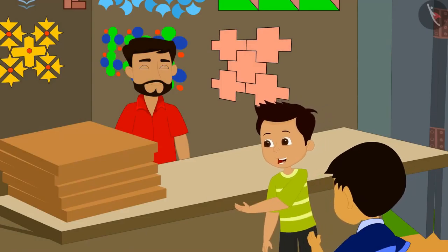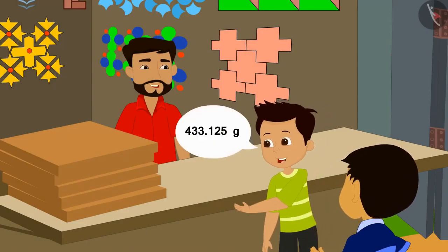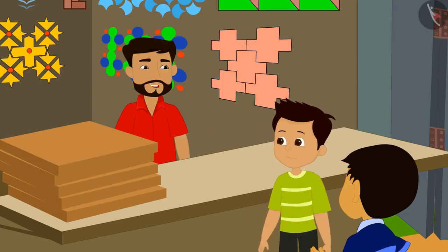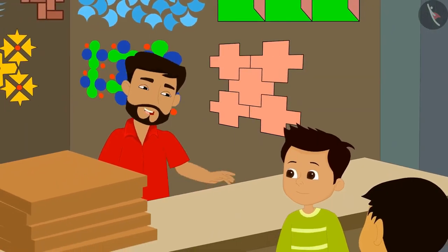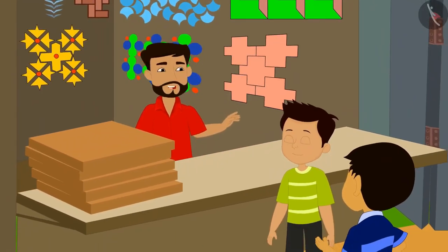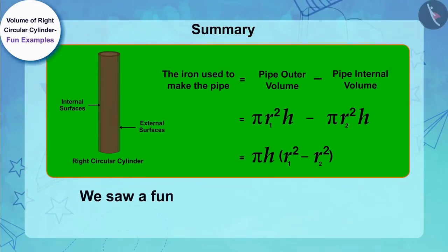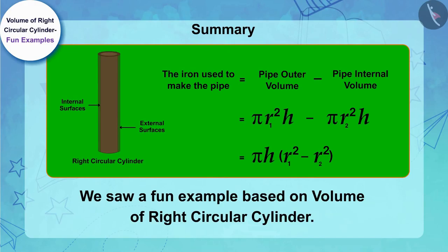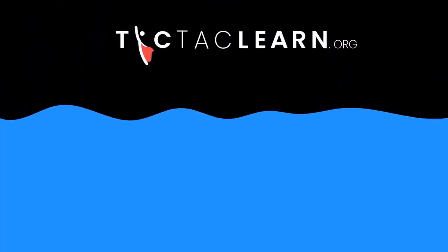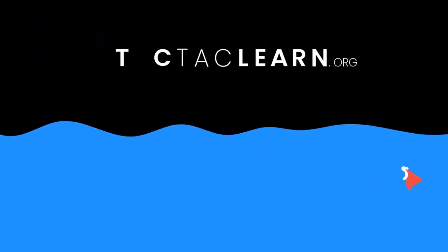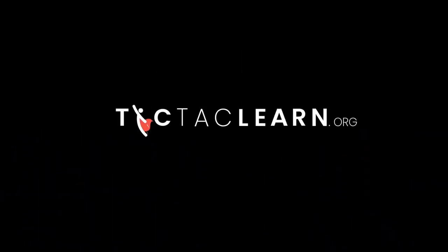The two friends told Uncle the amount of iron needed to make the pipe. On knowing this, Uncle thanked both of them and appreciated their intelligence. Friends, in this video, we saw a fun example based on volume of right circular cylinder. So hopefully, now you have a good understanding of volume of right circular cylinder. Thank you.